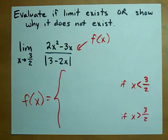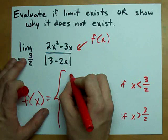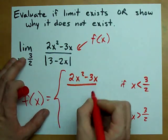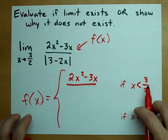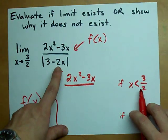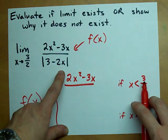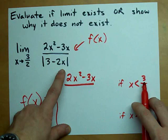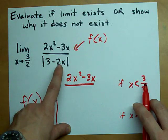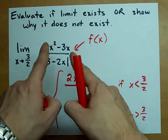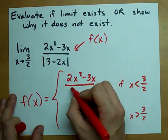If x is less than 3 halves the top of the fraction just stays as is. There's nothing special going on there. But in the bottom, x is less than 3 halves. That means 2x is less than 3. So in the bottom we have 3 minus something a little less than 3. Well that's a positive number and these absolute value bars wouldn't have played any role at all.